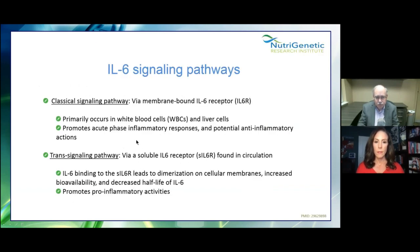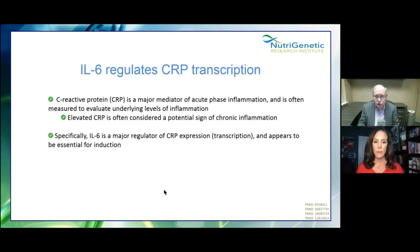There are two pathways. The classical signaling pathway occurs in white blood cells and liver cells, promoting an acute phase inflammatory response and potential anti-inflammatory actions — it can be inflammatory or anti-inflammatory. The second pathway involves IL-6 binding that leads to dominalization on cellular membranes, increased bioavailability, and promotes pro-inflammatory activities. CRP, C-reactive protein, is a mediator of acute phase inflammation, and IL-6 is a major regulator of CRP expression — it appears essential for inducing CRP.